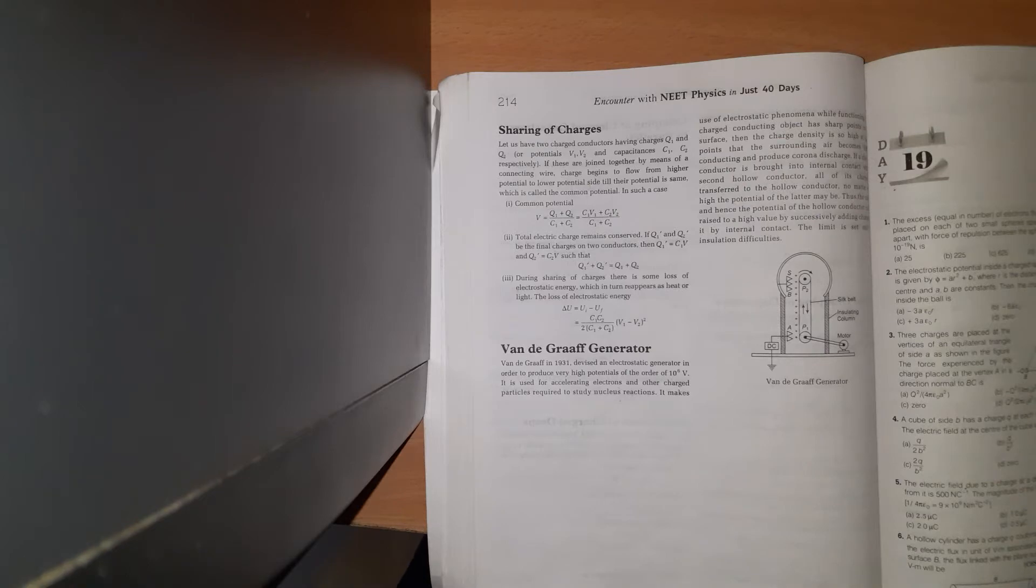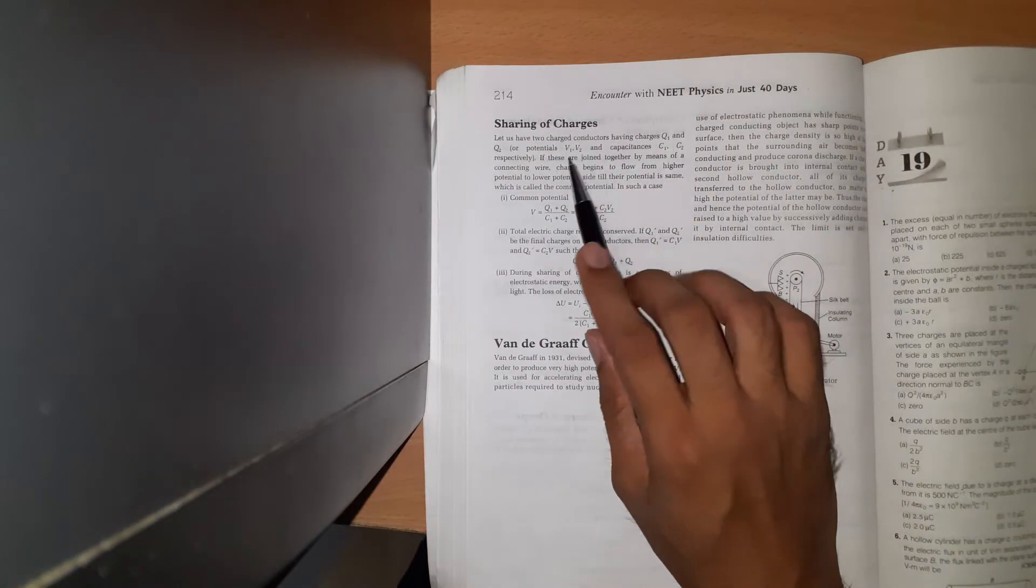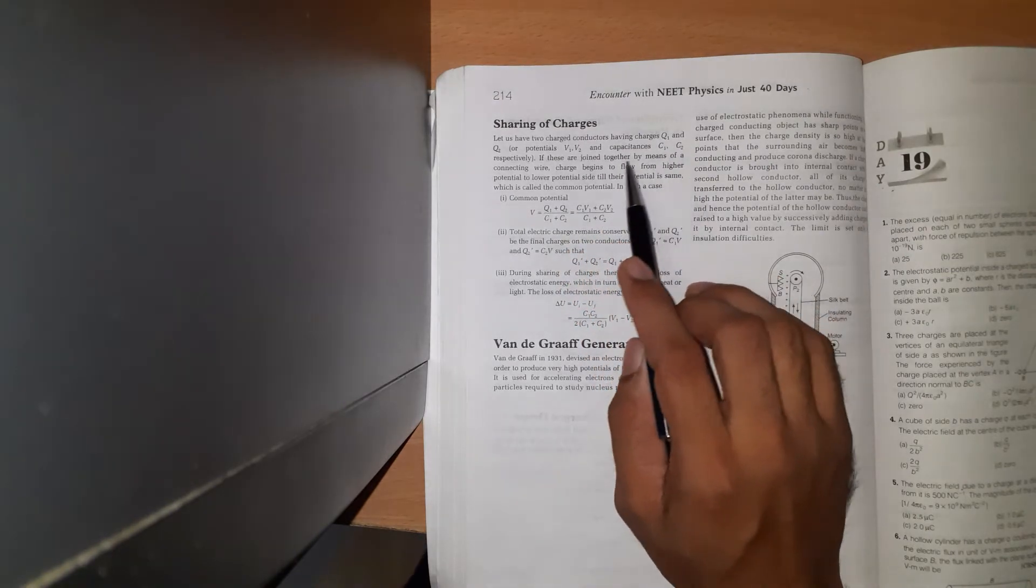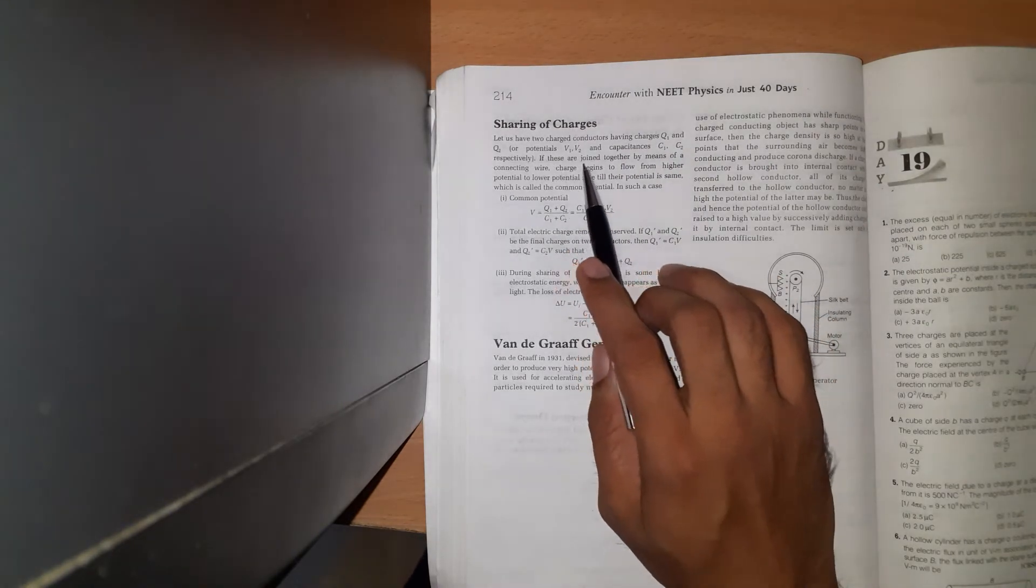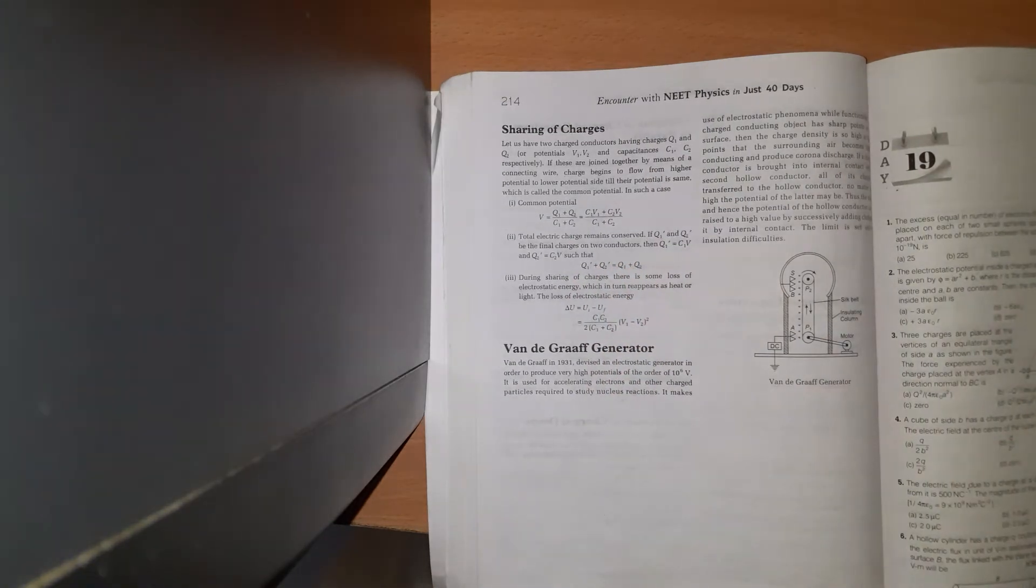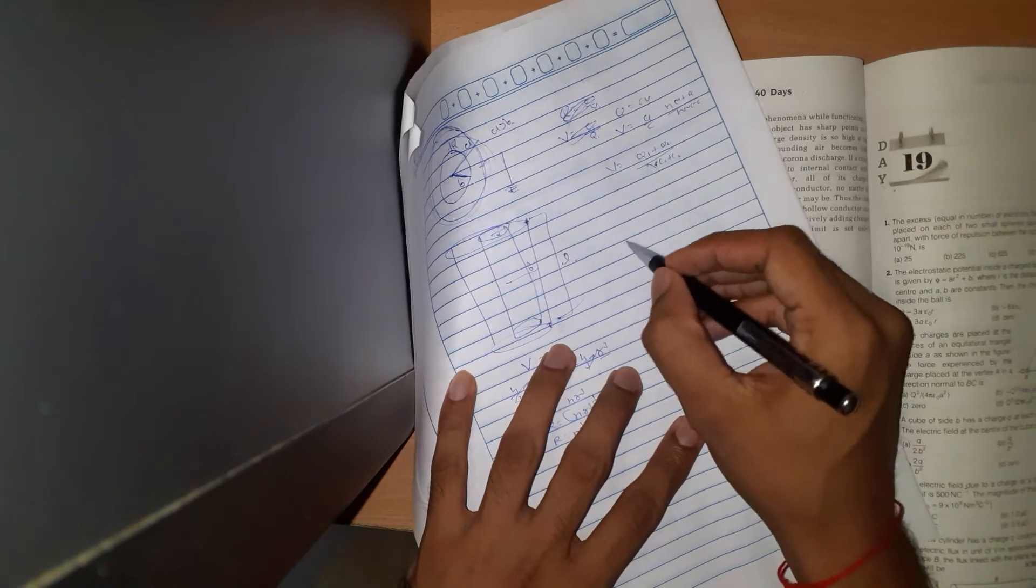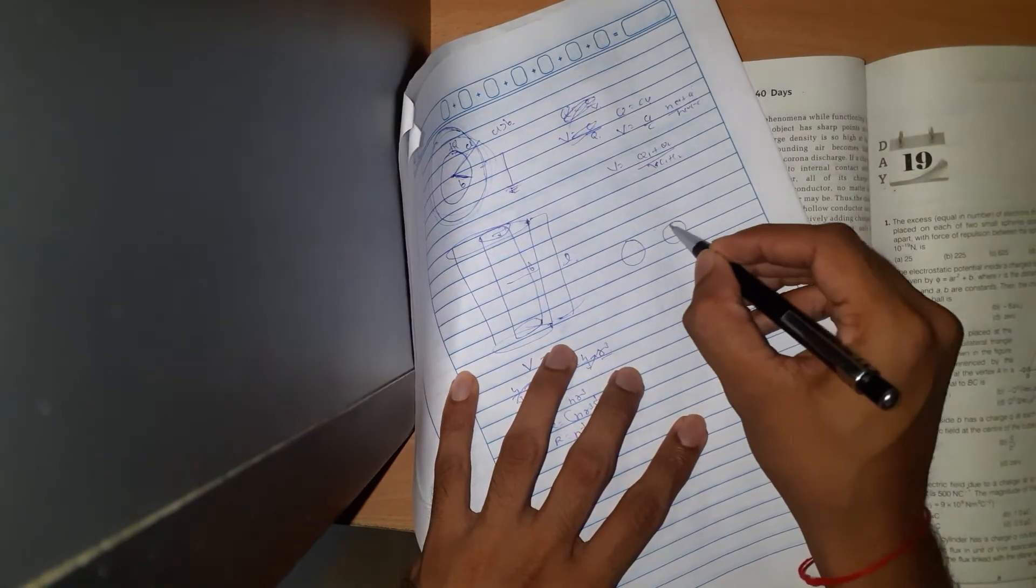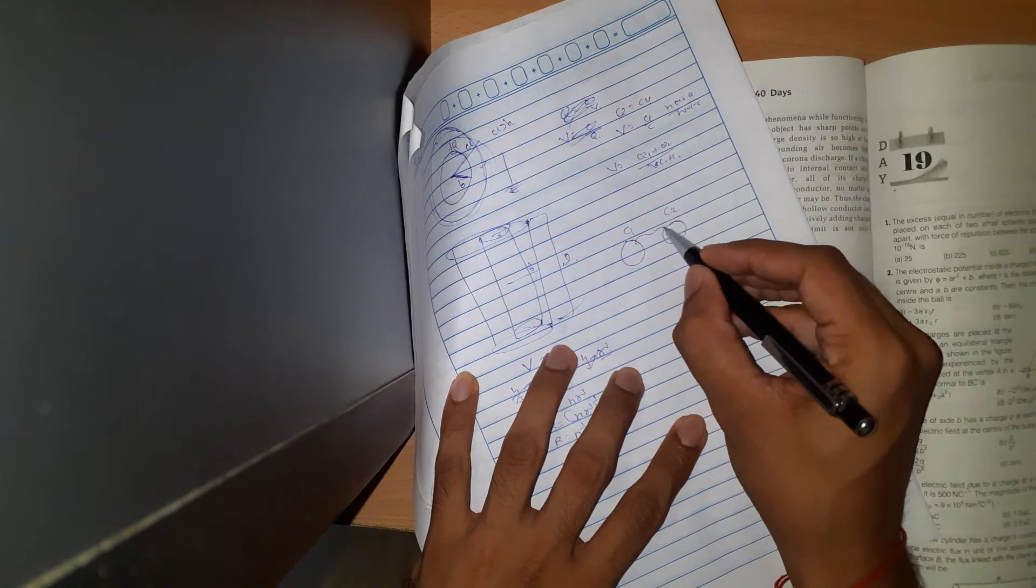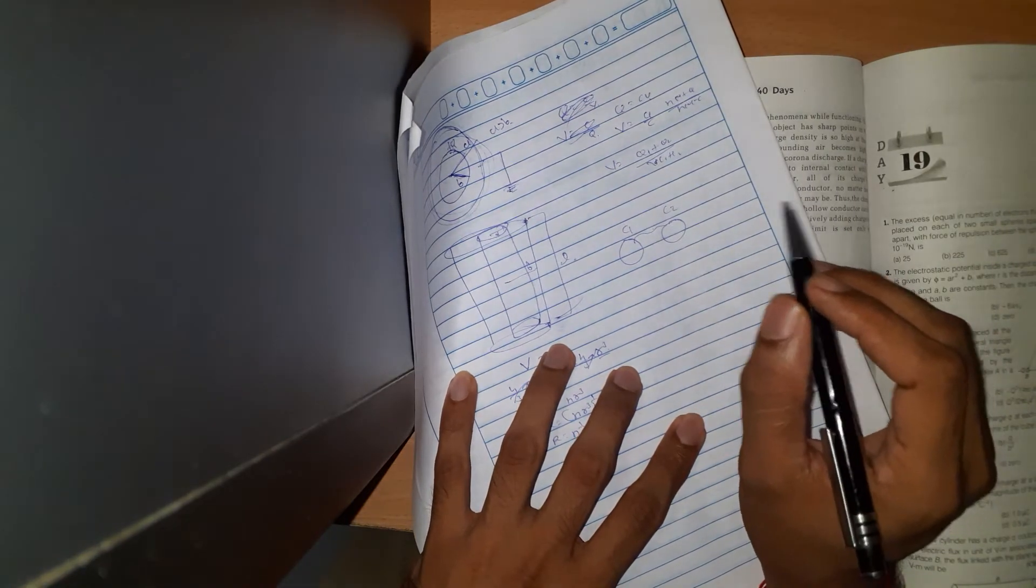We have two conductors with charges Q1 and Q2, potentials V1 and V2, and capacitances C1 and C2. If they are joined together by a conducting wire, there will be charge flow between the conductors.